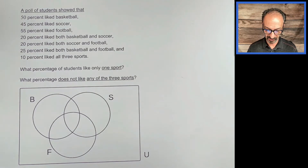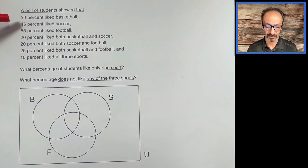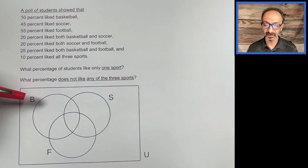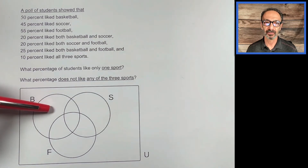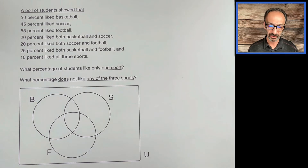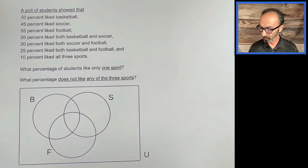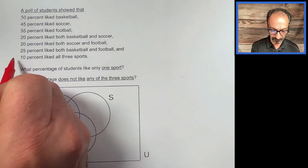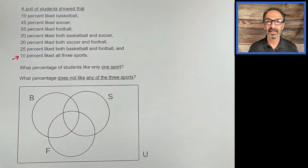The main thing I notice is that students usually start right here and write the 50 next to B or inside. It doesn't hurt, but here's the way I'm going to approach it. We have three sets — I wrote them down as separate lines instead of a paragraph. I'm going to start from the center, then go backwards to the intersections.